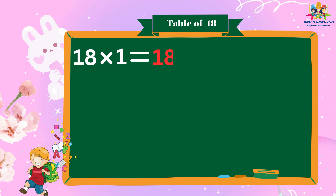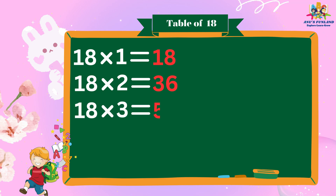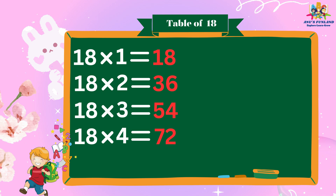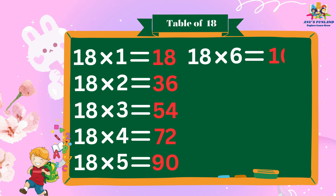18×1 is 18, 18×2 is 36, 18×3 is 54, 18×4 is 72, 18×5 is 90, 18×6 is 108.